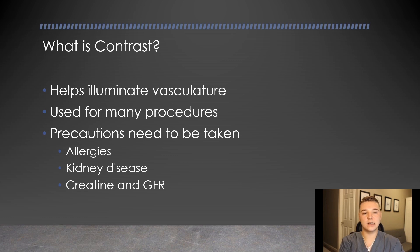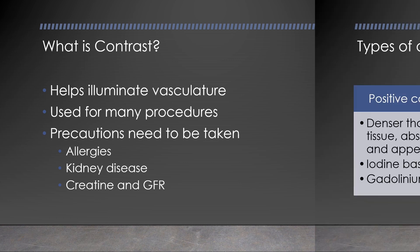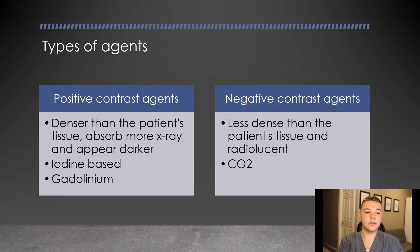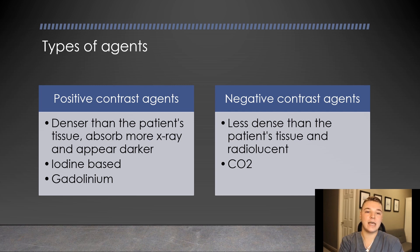There is also a consideration for pre- and post-hydration — IV fluids for patients that are at higher risk before and after giving them IV contrast. There are different types of contrast agents, including positive and negative contrast agents. A positive contrast agent includes iodine and gadolinium-based contrasts. They are denser than the patient's tissue, therefore absorb more x-ray and appear darker. The most commonly used is iodine-based, such as Visipaque or Omnipaque. Gadolinium is an option; however, it is expensive and mainly used in MRI imaging rather than under fluoroscopy, such as we use in IR.